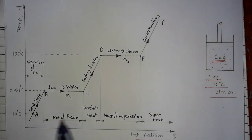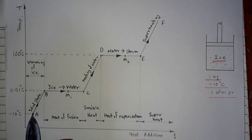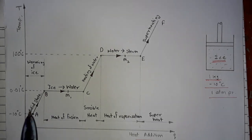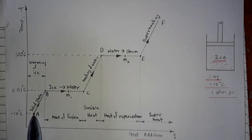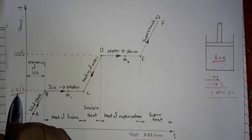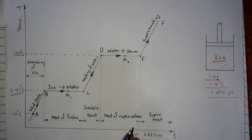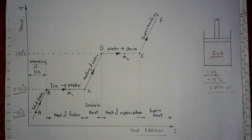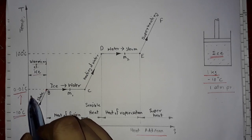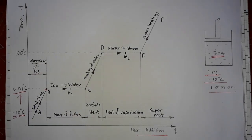This ice, which is at minus 10 degree Celsius and 1 atmospheric pressure, is represented at point A on the graph. In process A to B, if we add any amount of heat to the ice, it gets warmer and reaches 0 degree Celsius. During this warming of ice, temperature increases from minus 10 degree Celsius to 0 degree Celsius at constant pressure.